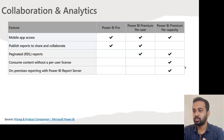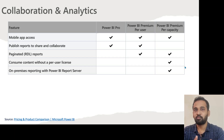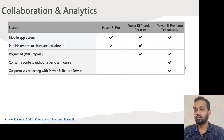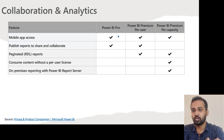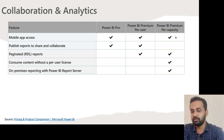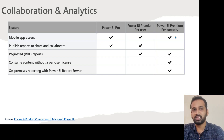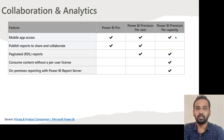Moving on to the first section: collaboration and analytics. This is the screen which is already on the website. I just want to go through it to recall those features and also connect with what is hidden. The first thing is mobile app access, which is available in Pro, Power BI Premium Per User, and Premium Per Capacity. I have not compared this with Power BI Embedded. We are going to cover three here: Pro, Premium Per User, and Premium Per Capacity.